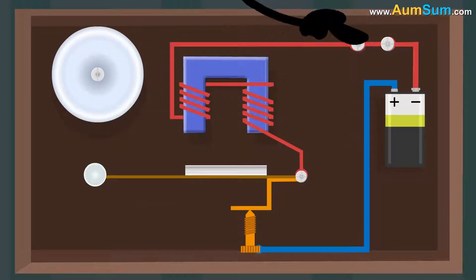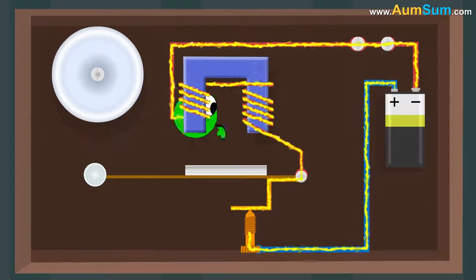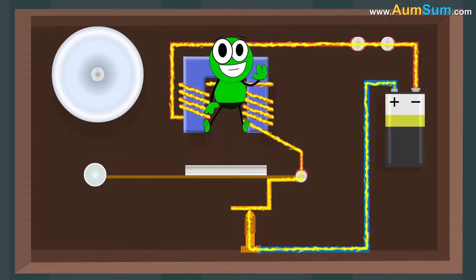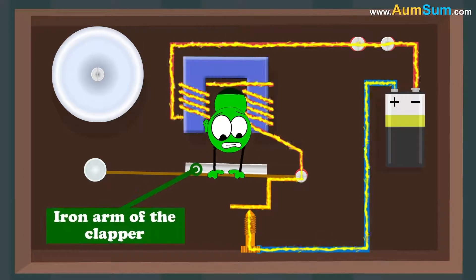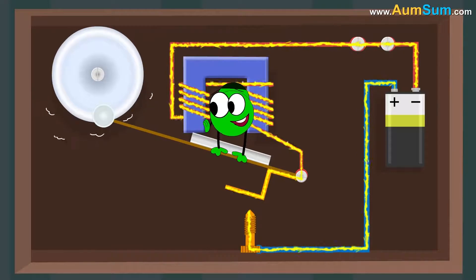When the switch is closed and electric current passes from the battery to the electromagnet, this leads to the creation of a magnetic field. This magnetic field attracts the iron arm of the clapper. As a result, the metal ball strikes and we hear a sound.